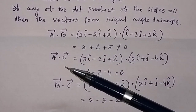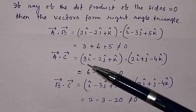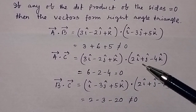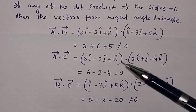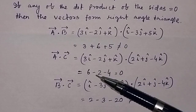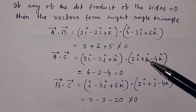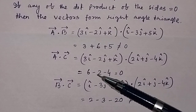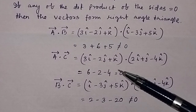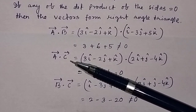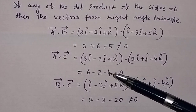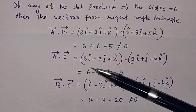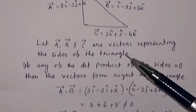Now let us check a·c. Taking the dot product: (3i-cap minus 2j-cap plus k-cap)·(2i-cap plus j-cap minus 4k-cap) equals 3×2=6, (−2)×1=−2, 1×(−4)=−4. So this equals 6 minus 2 minus 4, which equals zero. So sides a and c are the right angle sides — the angle between a and c is 90 degrees because a·c equals zero.